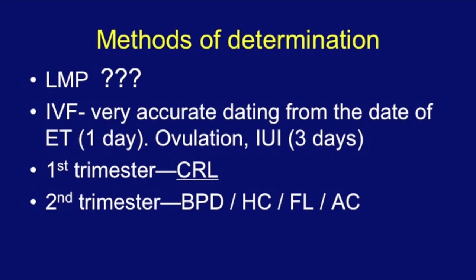What are the good methods of determination? LMP — whenever the patient comes for the ultrasound, the first thing we ask is the LMP, but many times patients are not very good at remembering it. It may be a delayed conception or periods coming late, so LMP is not a very good method. IVF pregnancy gives very accurate dating from the date of embryo transfer, within plus/minus one day. If the date of ovulation from follicle studies or IUI is known, it is in the plus/minus three days range.